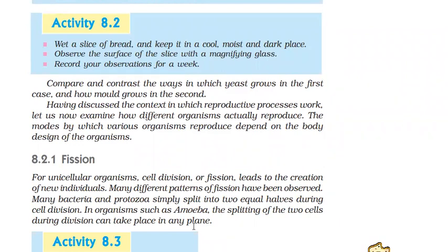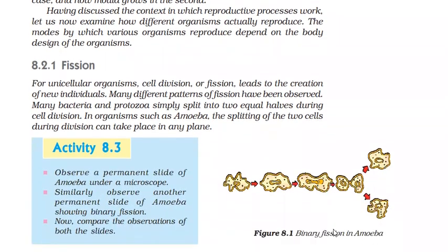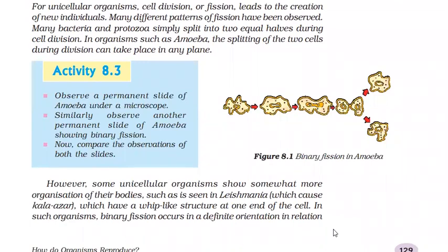Fission means breaking. In unicellular organisms, there is cell division. Many different patterns of fission have been observed. Bacteria and protozoa simply split into two equal halves during cell division, and each daughter cell grows into a new individual. There are two types of fission: binary and multiple. Binary fission is seen in amoeba and bacteria. For example, in amoeba and paramecium.